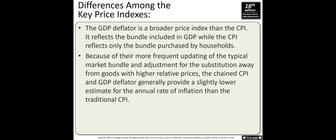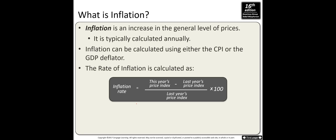Because both the GDP deflator basket and the chain CPI basket are updated, they generally provide a slightly lower estimate of the annual rate of inflation than the traditional CPI, which uses a fixed basket. Inflation is an increase in the general level of prices, typically calculated annually. It can be calculated using any of the price indices. The inflation rate formula is: this year's CPI minus last year's CPI, divided by last year's CPI. You can replace CPI with the GDP deflator.